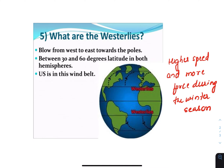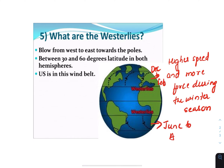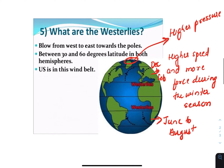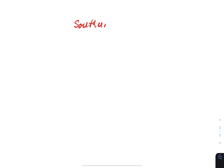Meteorologists report that the westerlies have higher speeds and more force during the winter season, which in the Northern Hemisphere is from December to February and in the Southern Hemisphere is from June to August. This distinction is due to the air pressure over the poles during the winter — lower pressure means stronger westerly winds.